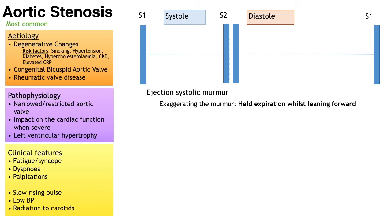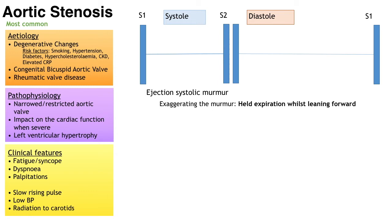When a patient presents they may describe a triad of symptoms: fatigue and syncope, dyspnea and palpitations, or chest pain. Fatigue and syncope may be due to an arrhythmia or postural hypotension. Shortness of breath occurs because the left heart can't keep up with demands when cardiac output increases. Palpitations or chest pain occur because coronary blood flow is insufficient for the increased left ventricular muscle mass.